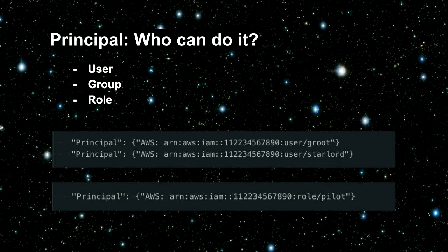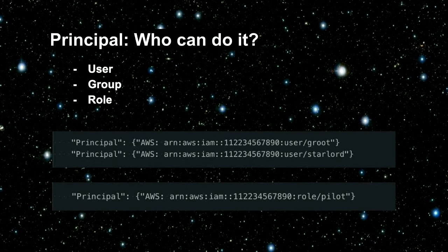A principal is who can do the thing. This might be a user, this might be a group of users, or it might even be a role. A role is kind of like not a person but a job you can do. So it might be a Guardian or an Avenger, or in this case a pilot.